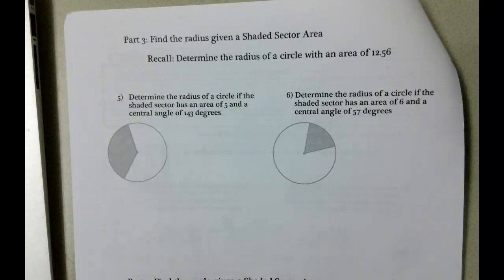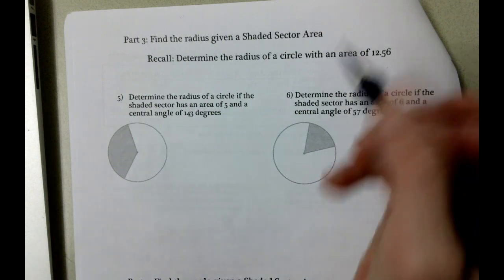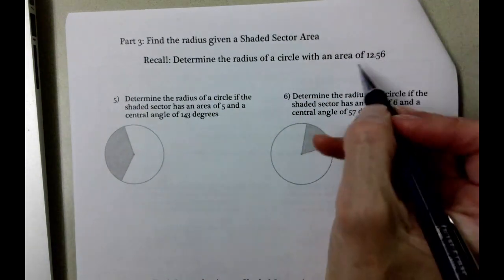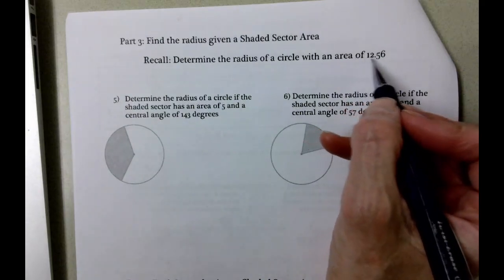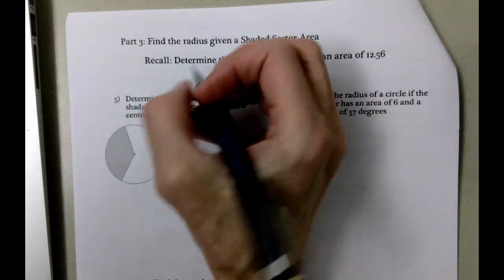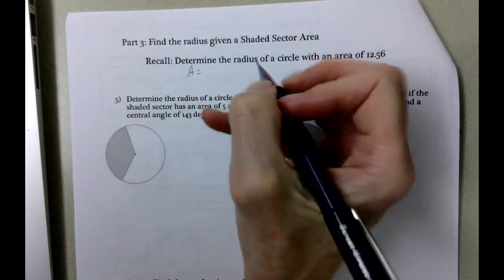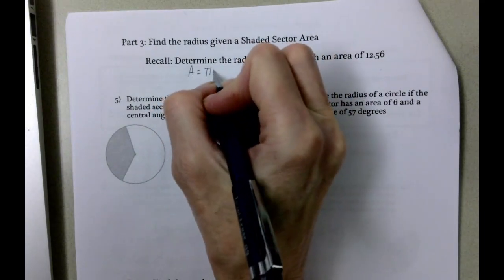Find the radius given a shaded sector area for part 3. Let's start with: determine the radius of a circle with an area of 12.56. Once again, remember that the formula for the area of a circle is pi r squared.